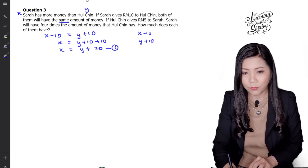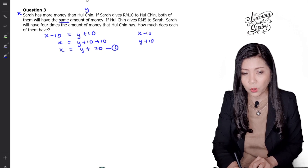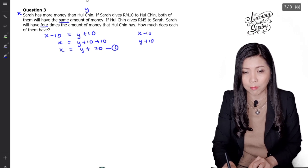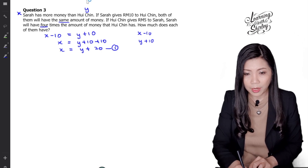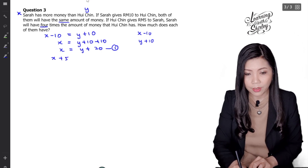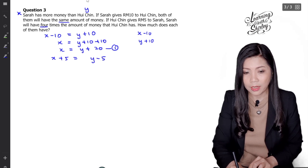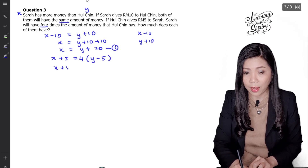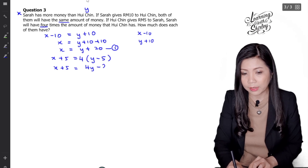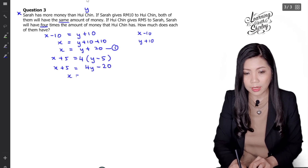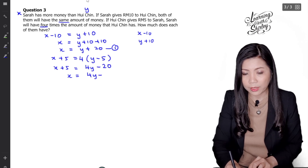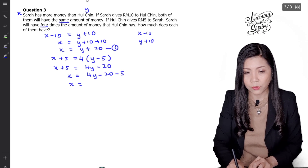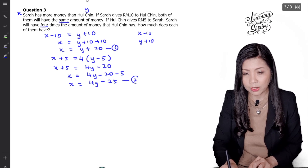If Huichin gives RM5 to Sarah, Sarah will have 4 times the amount of money that Huichin has. So X plus 5 equals 4 times Y minus 5. Expanding: X plus 5 equals 4Y minus 20. So X equals 4Y minus 25. This is equation 2.